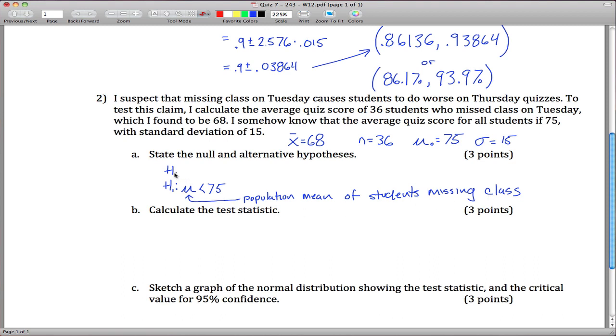If that's the alternative hypothesis, then our null hypothesis, you can write it in one of two ways. Some people prefer mu equals 75, some books I should say. Some prefer that mu is greater than or equal to 75. I'm fine with either one.